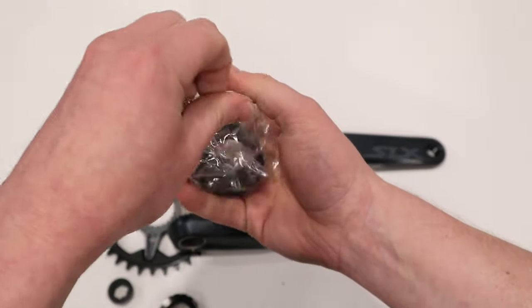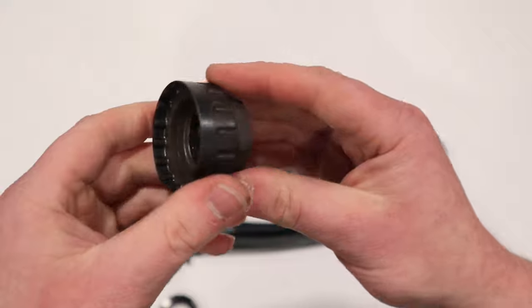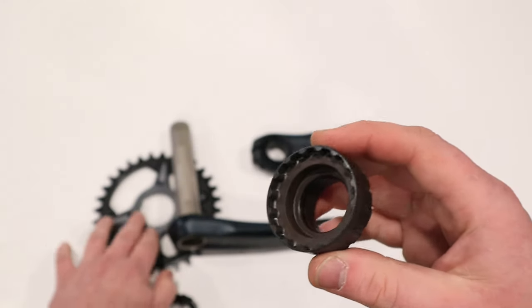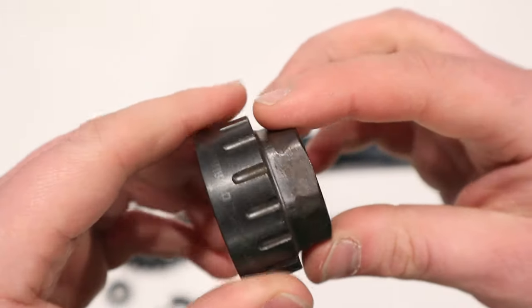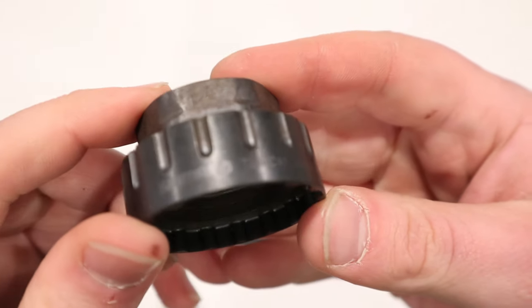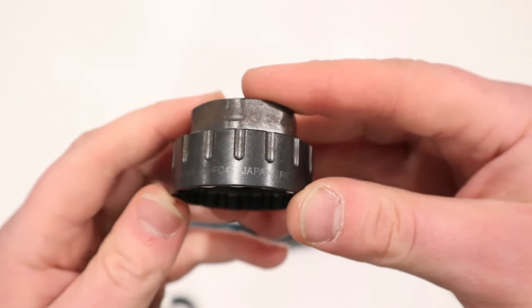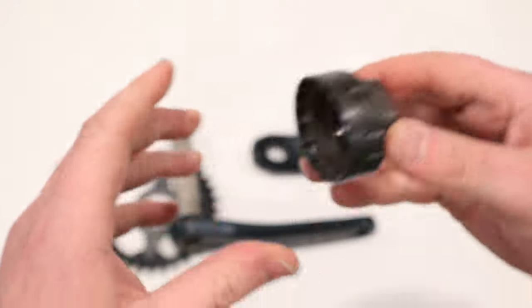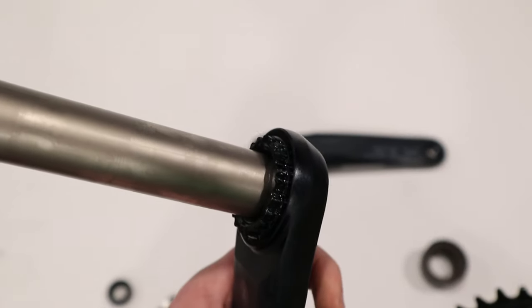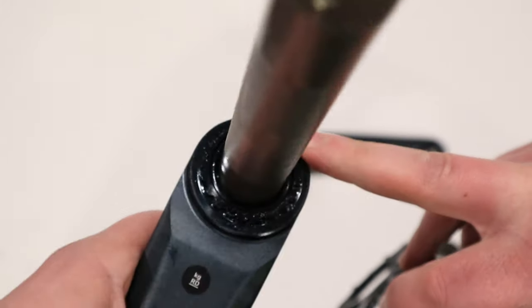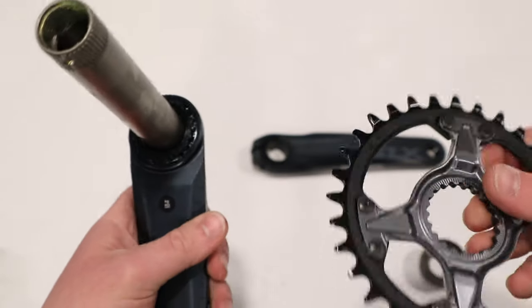And very interestingly, Shimano is sending it with their new lock ring tool for the chainring. And this is kind of neat because generally, at least in my experience, Shimano has usually made you buy these things separately. So it's interesting to see that this is coming with it. So here we've got the TL-FC41, and what that does is when you take a look at the drive side crank arm, you can see that it's got this spline going around the spindle.